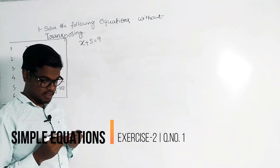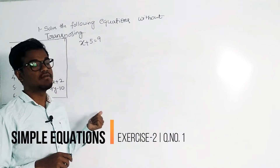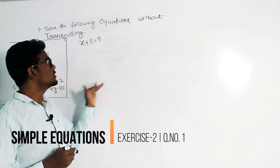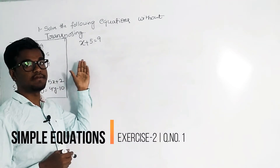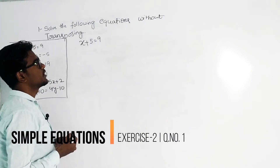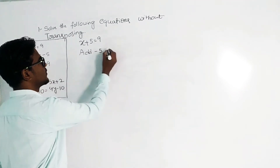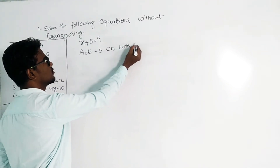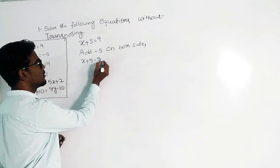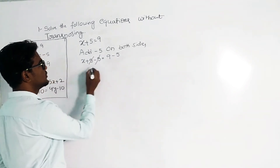In these types of problems, we need to isolate the variable on the left side. To remove 5 from the left side, we add minus 5 on both sides. So x plus 5 minus 5 equals 9 minus 5; the plus 5 and minus 5 cancel out.